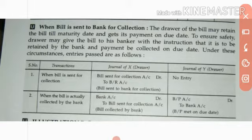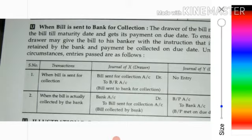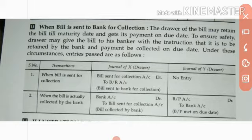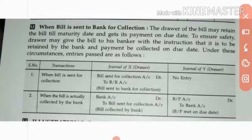The drawer of the bill may retain the bill till the maturity date and get payment on the due date. The drawer has the option to keep the bill with himself till the date of maturity and collect the payment. To ensure safety, the drawer may give the bill to his banker with the instruction that it is to be retained by the bank and payment is to be collected on the due date. So what entry does the drawer make in this circumstance?